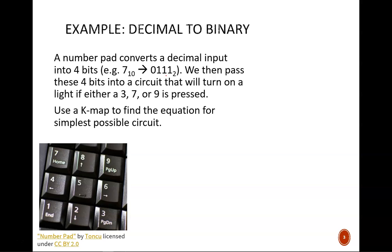Next, that 4-bit code is used to determine if a light turns on. If decimal 3, 7, or 9 is pressed, the light turns on. If any other number is pressed, the light stays off. Our task is to identify the simplest possible equation for the light output.